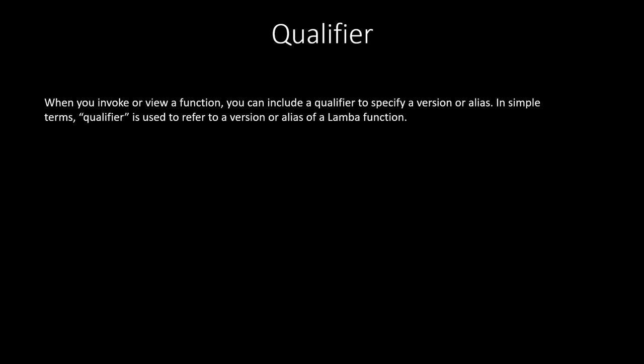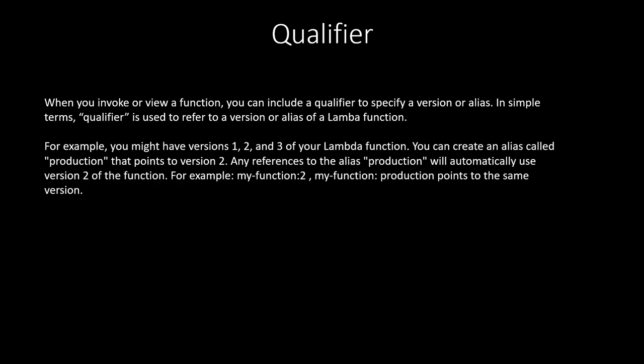Another concept is Lambda qualifier. When you invoke or view a function, you can include a qualifier to specify a version or alias. In simple terms, a qualifier is used to refer to a version or alias of a Lambda function. For example, you might have versions 1, 2, and 3 of your Lambda function and create an alias called 'production' that points to version 2. Any references to the alias 'production' will automatically use version 2. So 'my-function:2' and 'my-function:production' point to the same version — both are examples of qualifiers.